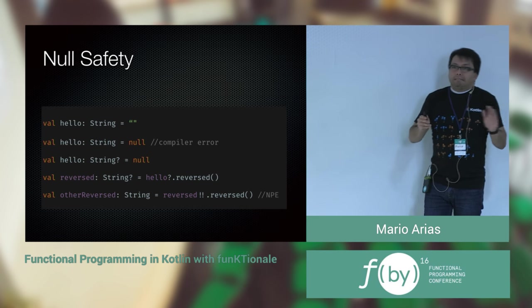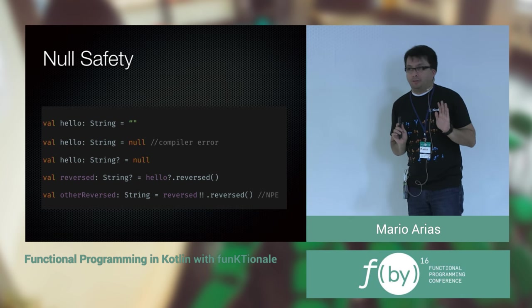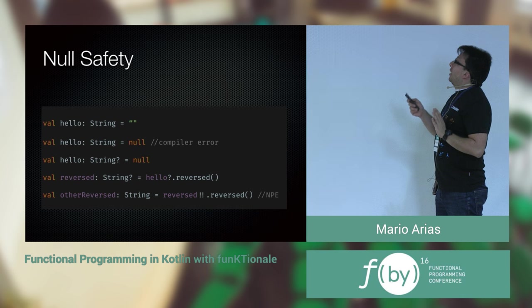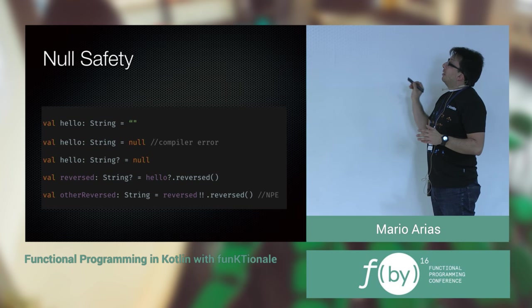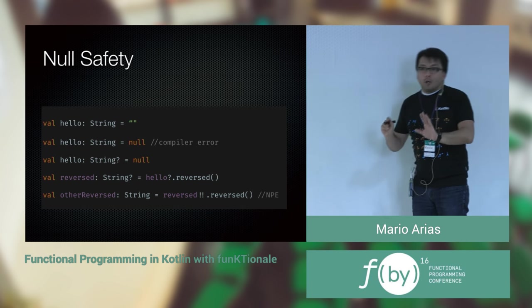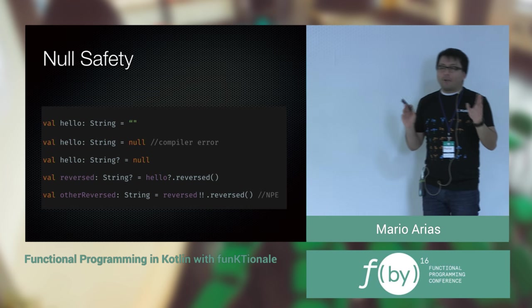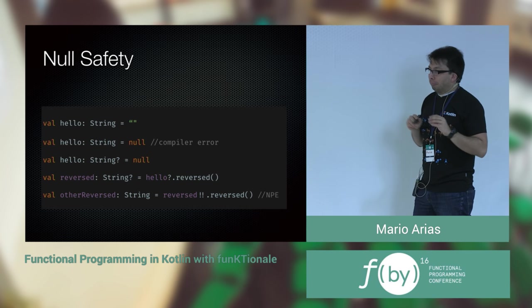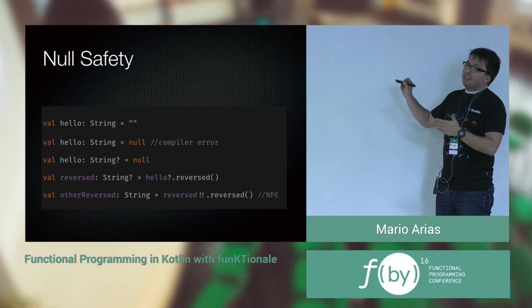If you don't include the question mark and you try to assign a null value, that's a compiler error. The compiler will say you declared it as non-null and then put a null there — please don't. When you have a nullable value, if you try to call any method on it, you need to use the question mark operator to signal that you know it could be null. The compiler is strict about what you can do with null values.